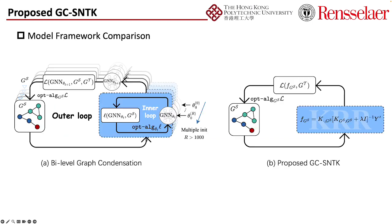Here is the comparison. On the left is the bi-level graph condensation method, while on the right is our proposed model. As you can see, our model makes the optimization process simpler and faster.